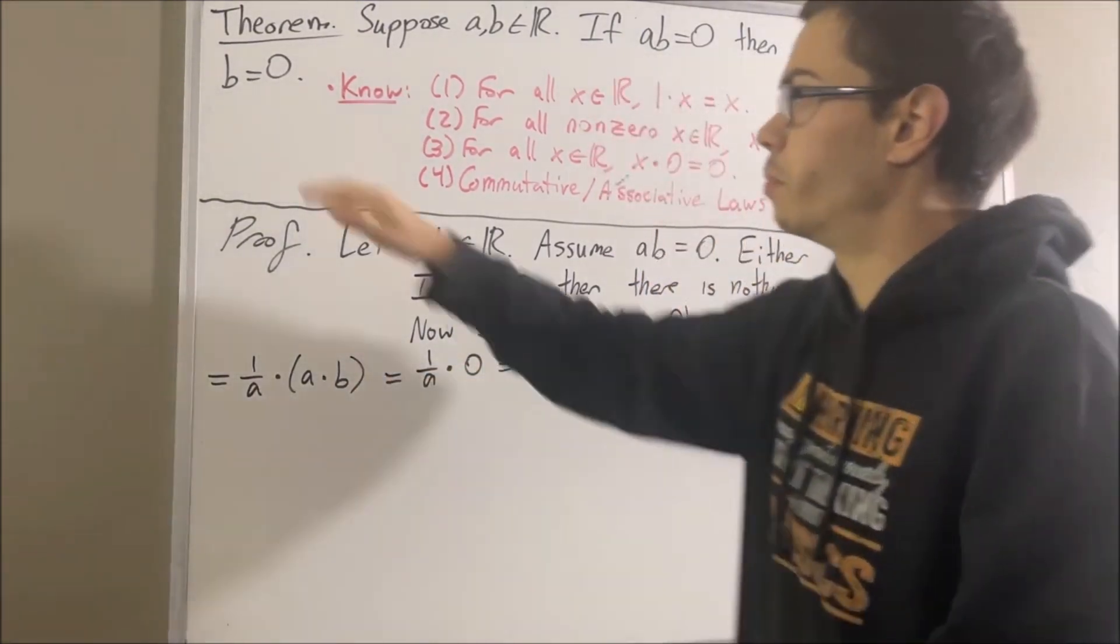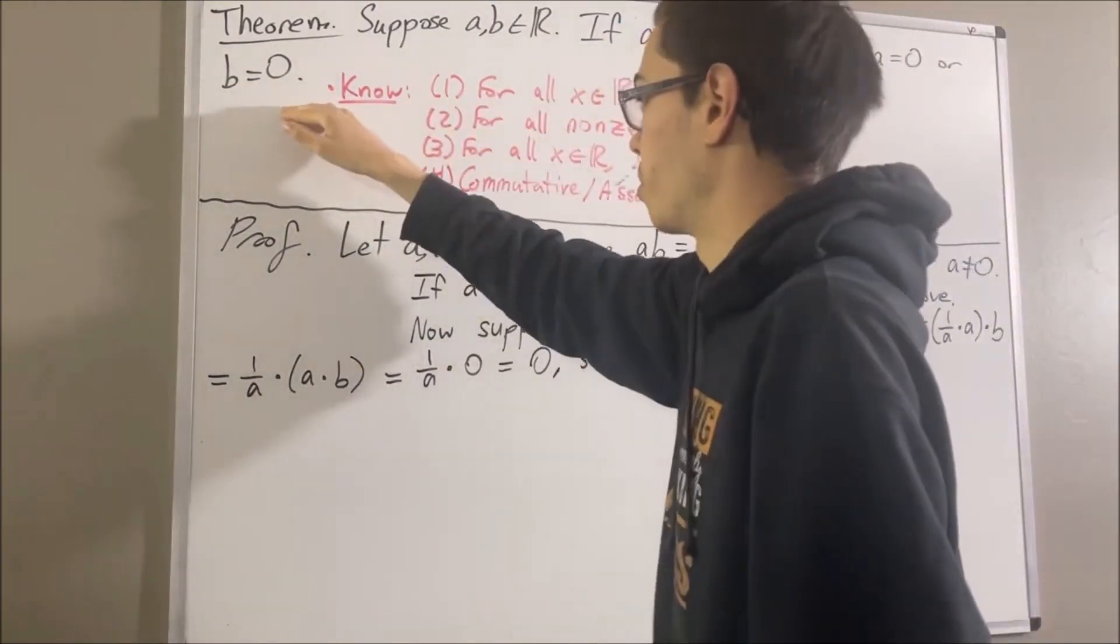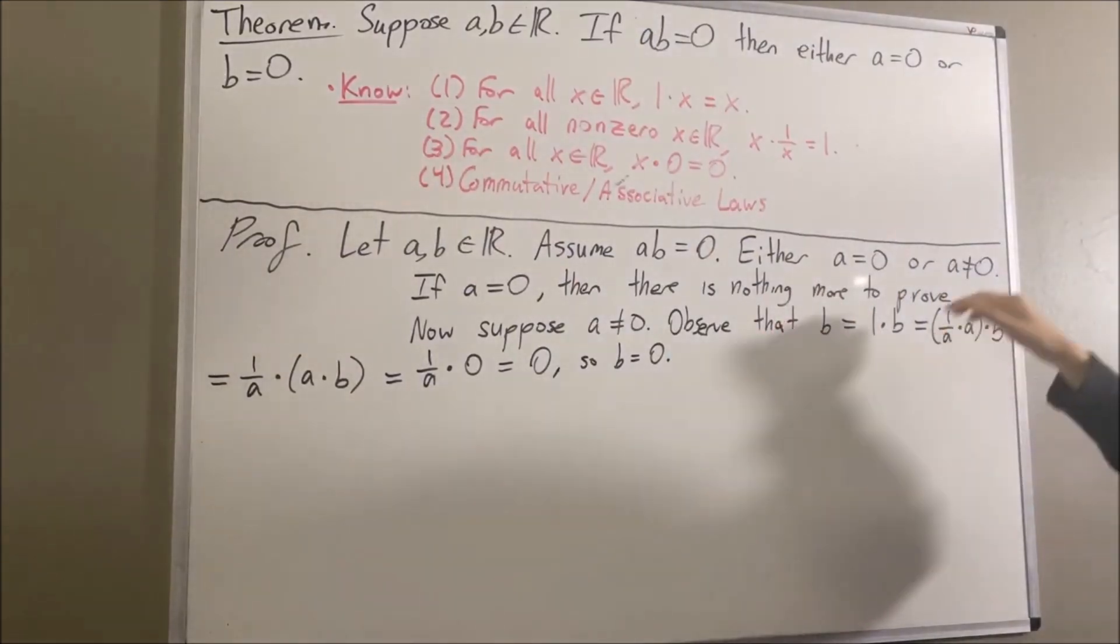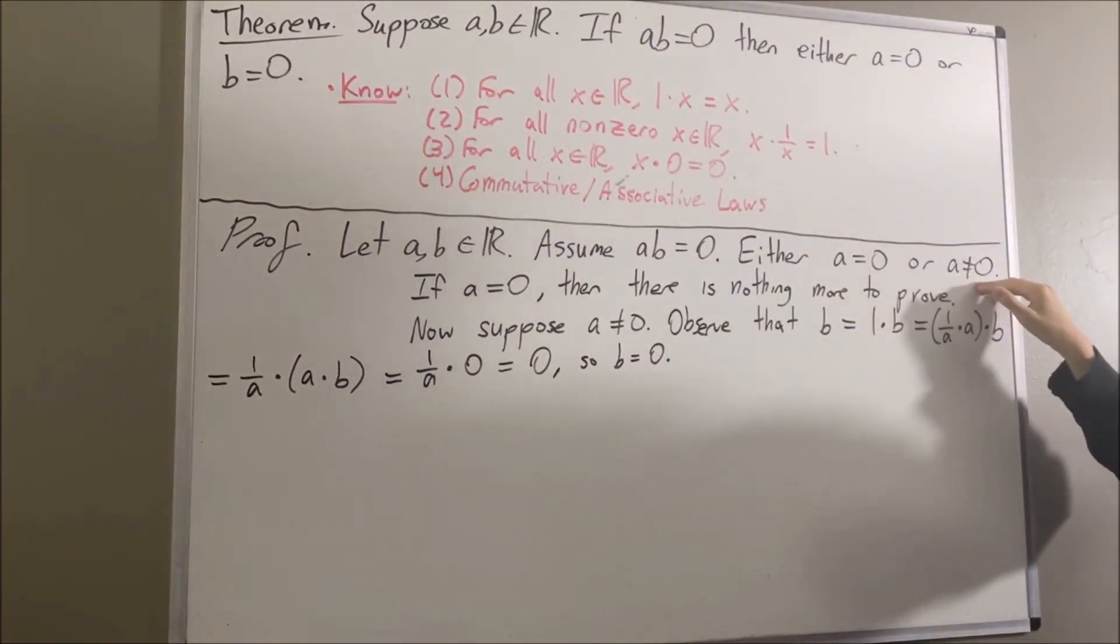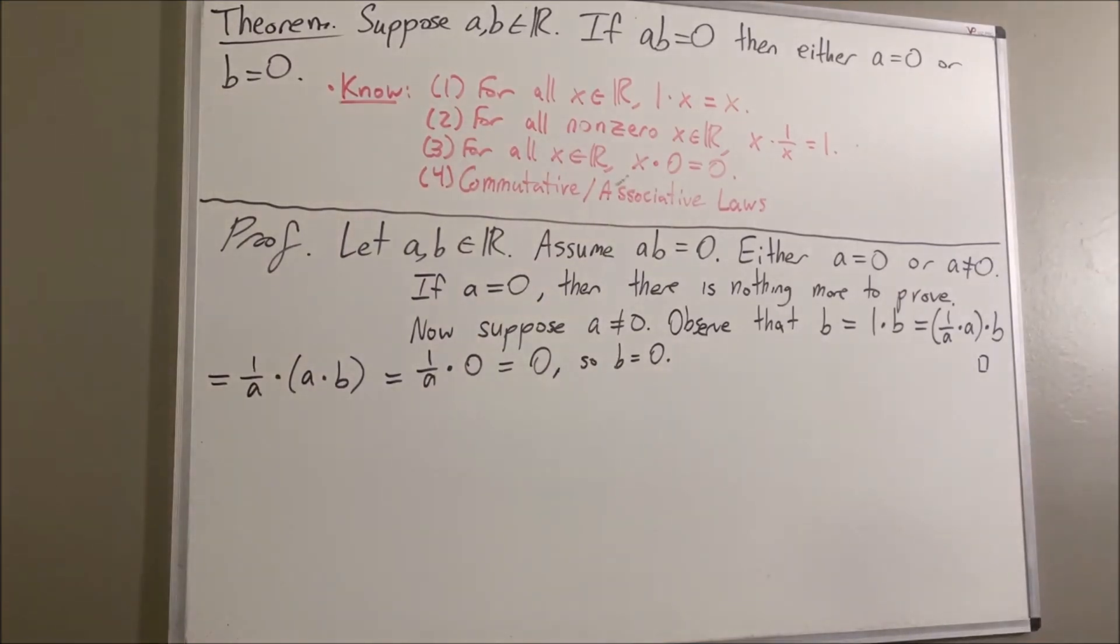So we've proven that B is equal to 0, which means either A is equal to 0 or B is equal to 0. So this completes the case where we have A is not equal to 0. And that's it. So yeah, that's pretty much it for this video.